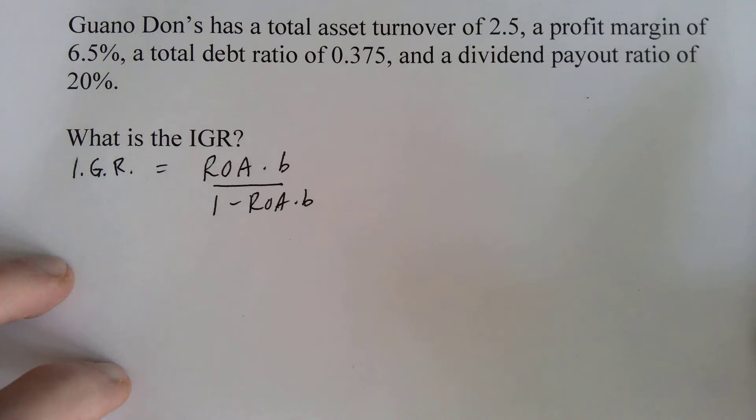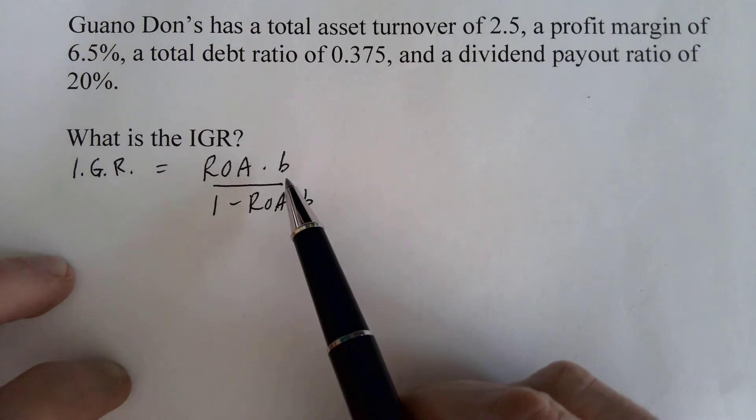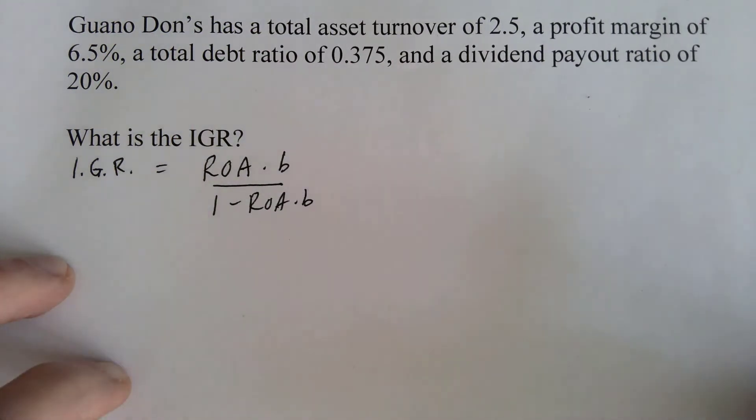When a firm has net income, that net income can go to one of two places. Either it goes to pay dividends or it goes into the retained earnings of the firm. And this B just represents the proportion of net income that goes into retained earnings. So let's talk about what these things mean and how we can get to them.